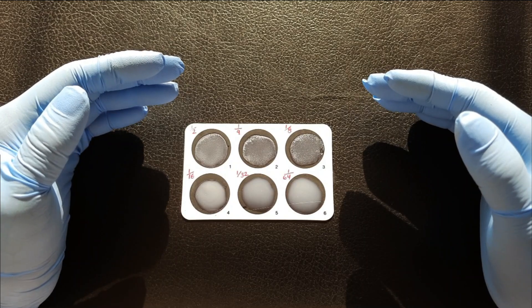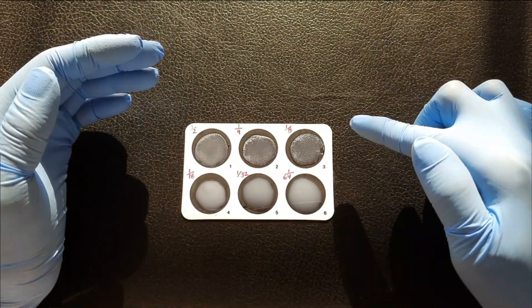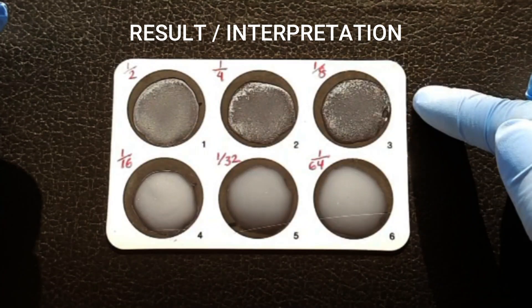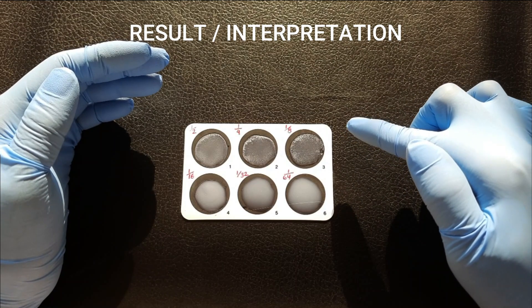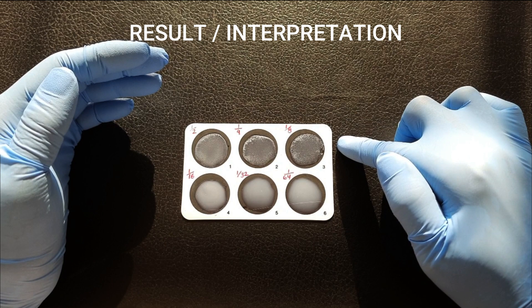Now, observe carefully for agglutination in each circle. Notice, agglutination has occurred up to circle 3. So, 1 in 8 is found the highest diluted serum up to which the agglutination is observed.